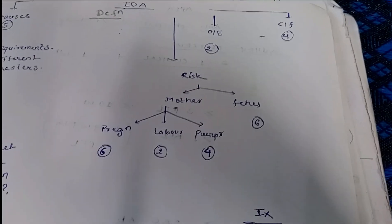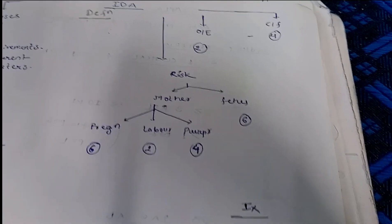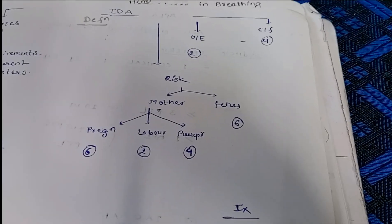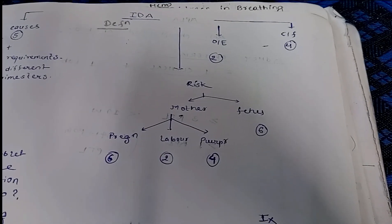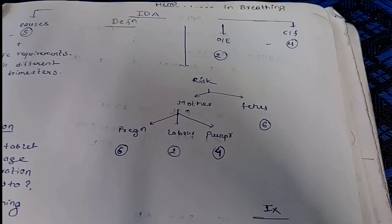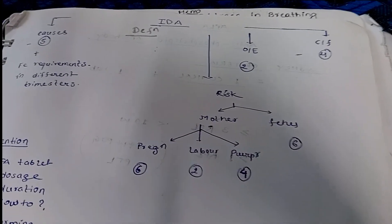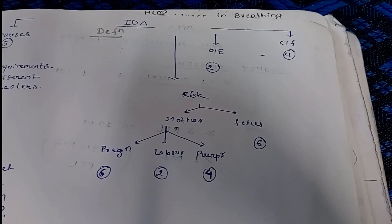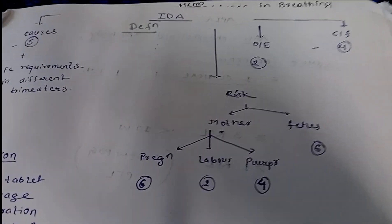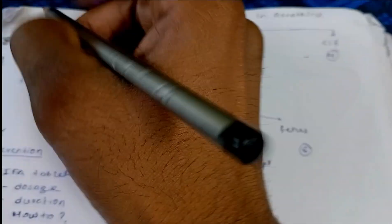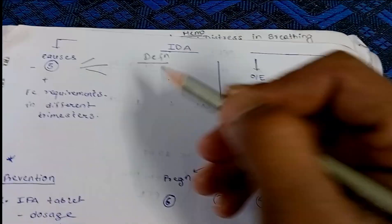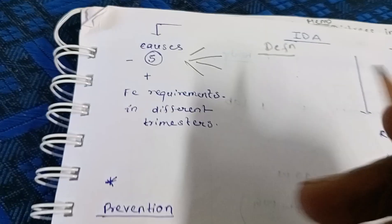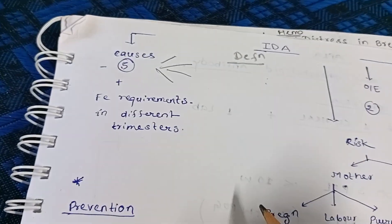A normal female requires only 700 milligram, but due to the presence of a fetus, the female requires more iron. The second cause is deficit in diet, as our country is a developing country. The third cause is hookworm infestation, which is very common. The fourth cause is multifetal pregnancy, and the fifth cause is reduced absorption.